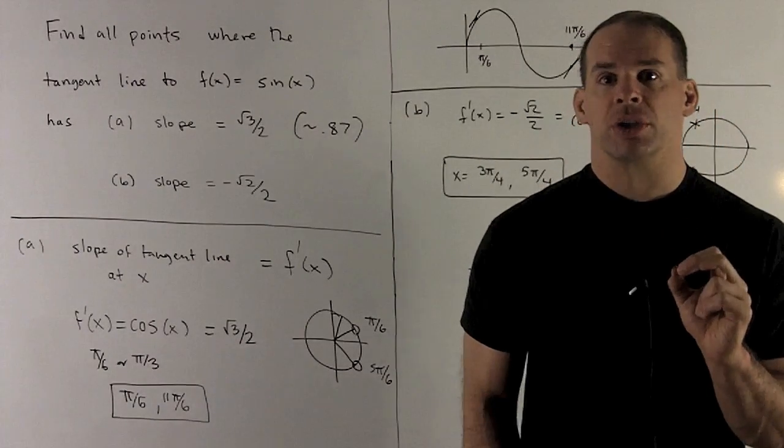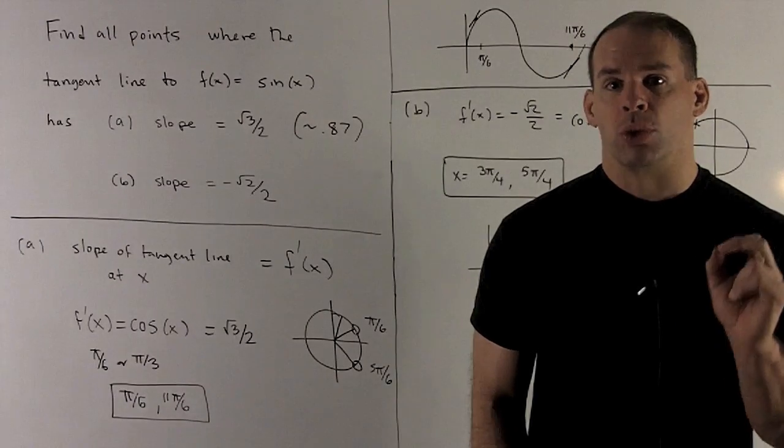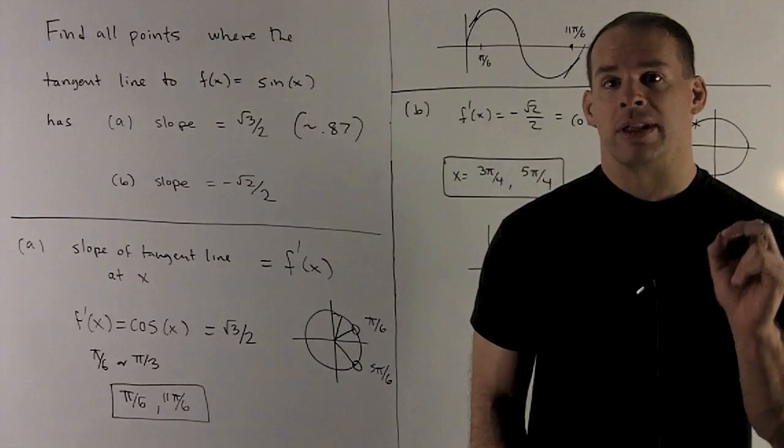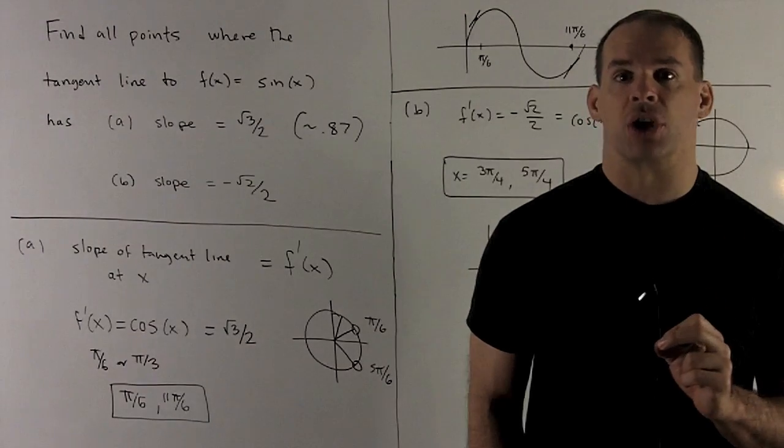So what do we do first? Well what is cosine? Cosine is the x value on the unit circle, so we're looking here at the points on the line x equals square root of 3 over 2 that intersect the unit circle.